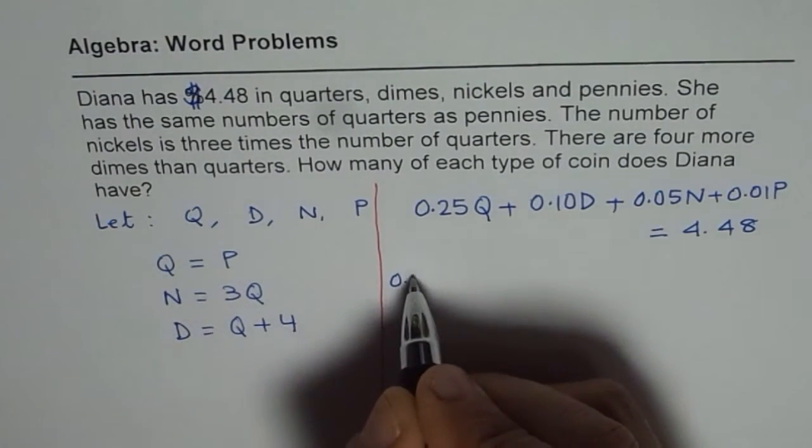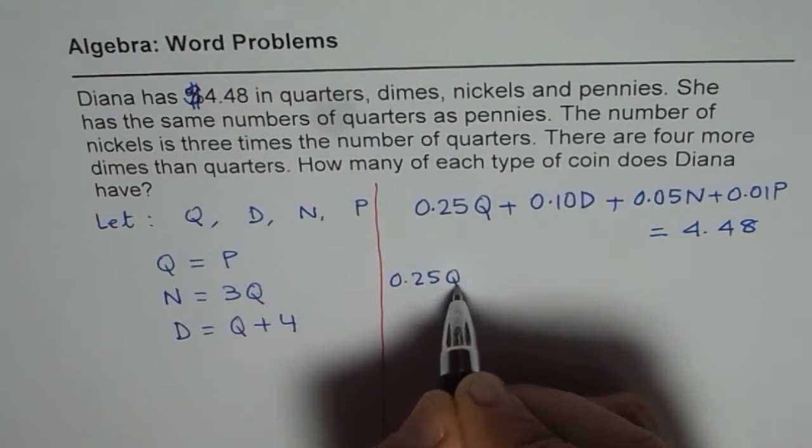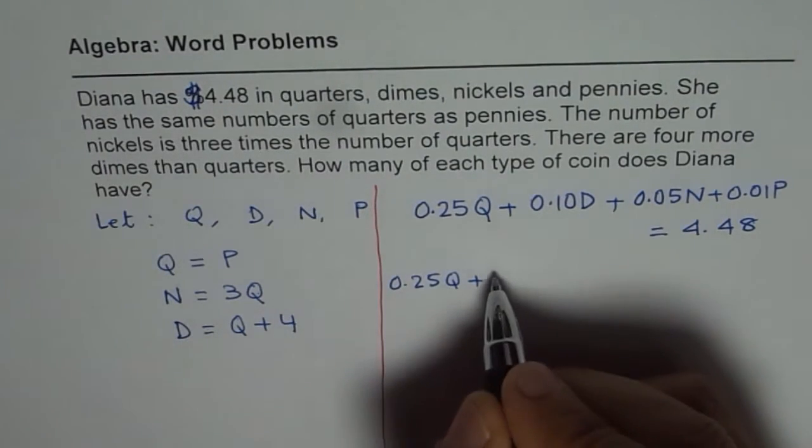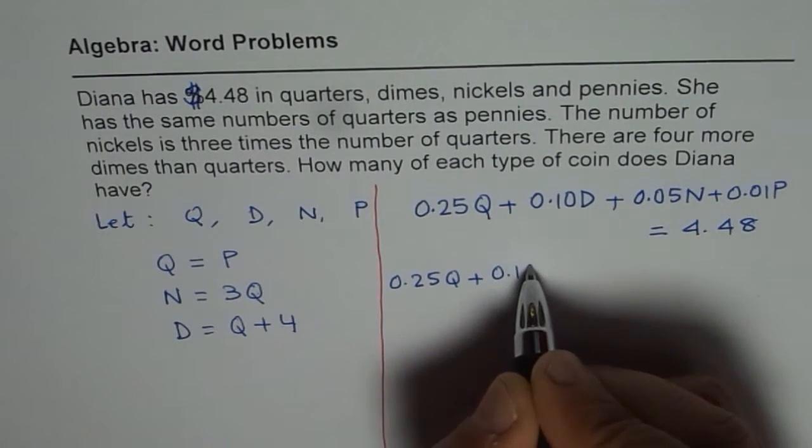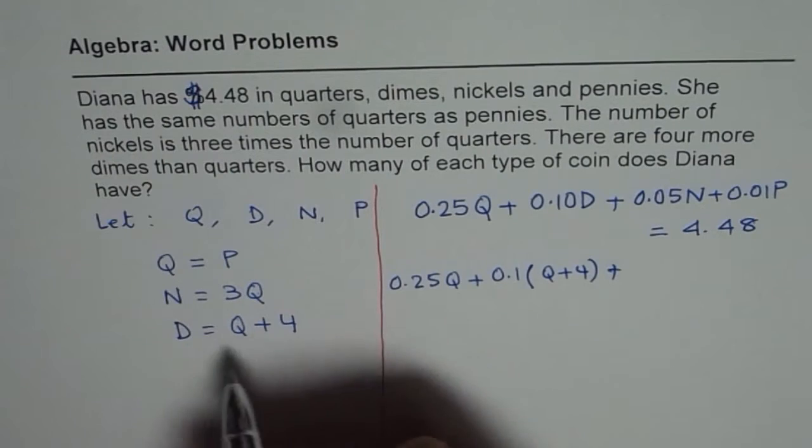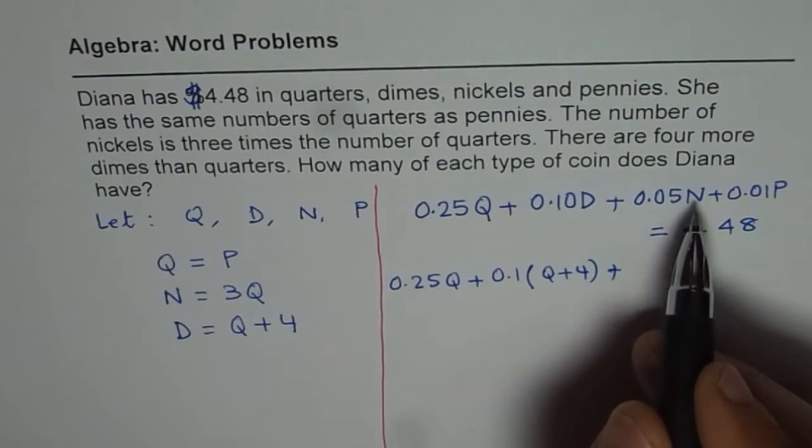So we have 0.25 quarters plus how many dimes? Dimes is quarters plus 4. So we get 0.1, dimes is quarters plus 4.